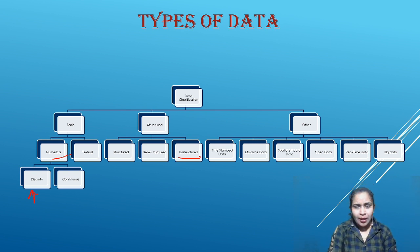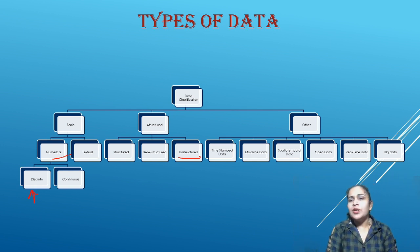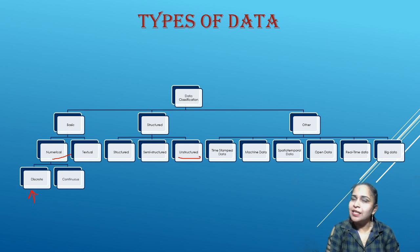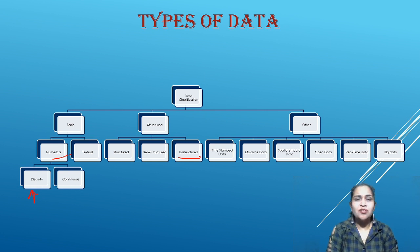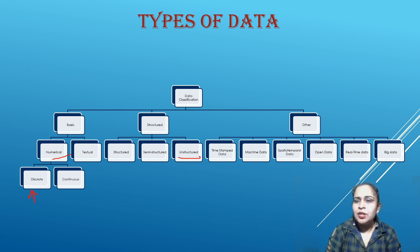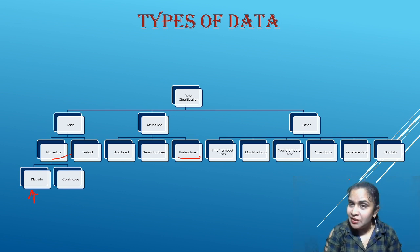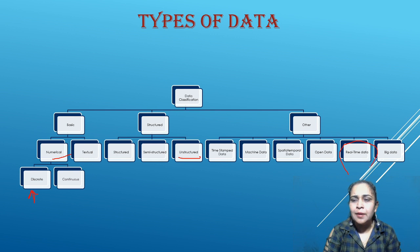Open data is data that is open for all, like information on websites that you can read, copy, and use without paying for it. Real-time data is data generated at the exact time of an event. This is very crucial data.